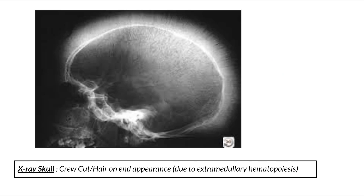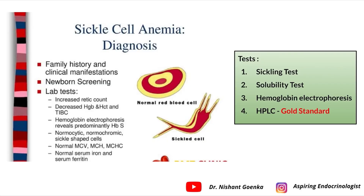A crew-cut or hair-on-end appearance on skull X-ray is found due to extramedullary hematopoiesis. For diagnosis, family history and clinical manifestation are important. Hematological findings include increased reticulocyte count, decreased hemoglobin and hematocrit, normocytic normochromic cells with sickle-shaped cells on peripheral blood smear, and normal MCV, MCH, serum iron, and serum ferritin. Hemoglobin electrophoresis reveals predominantly HbS. Other important tests include the sickling test, solubility test, and HPLC (high-performance liquid chromatography), which is the gold standard for diagnosis.